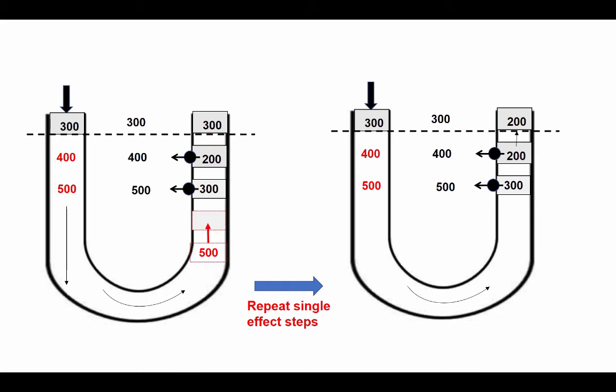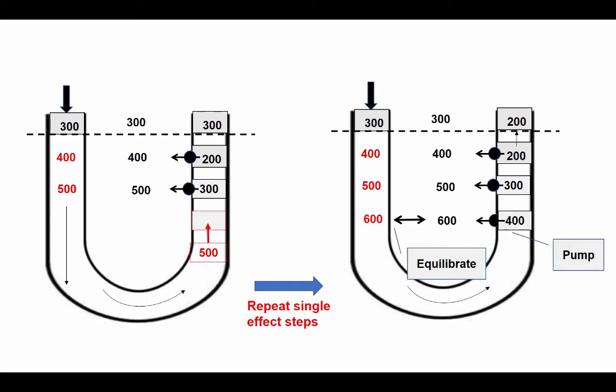It will go up the ascending loop into the thick ascending limb. So now we're going to have a space lower than in the previous figure, where a more concentrated fluid of 500 milliosmoles is going to flow into the thick ascending limb. The same thing is going to happen.